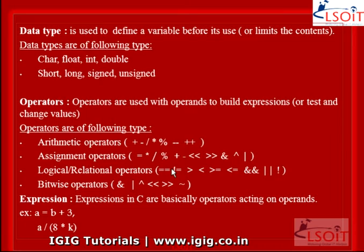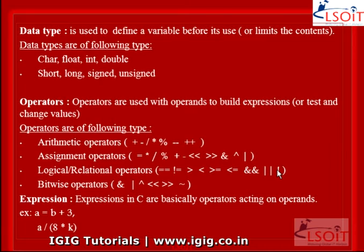If the values are not equal, then the condition becomes true. The greater-than operator checks if the value of the left operand is greater; if yes, the condition becomes true. The less-than operator checks if the left operand is less. The greater-than-or-equal-to operator checks if the left operand is greater than or equal to the right operand. The less-than-or-equal-to operator works similarly. The logical OR operator: if any operand is non-zero, the condition becomes true. The NOT operator is used to reverse the logical state of its operand.